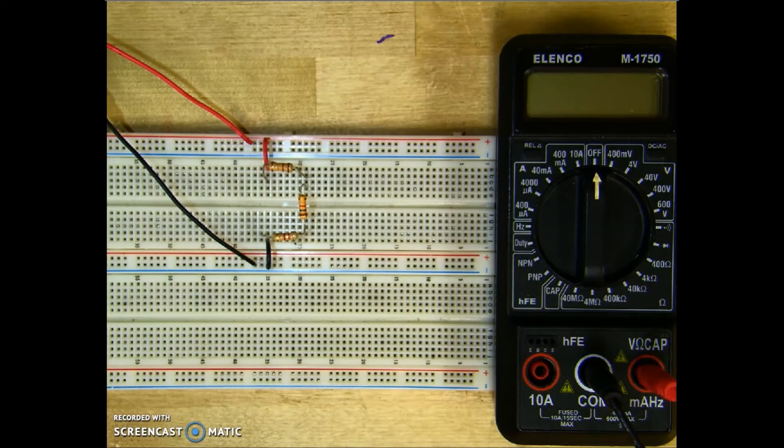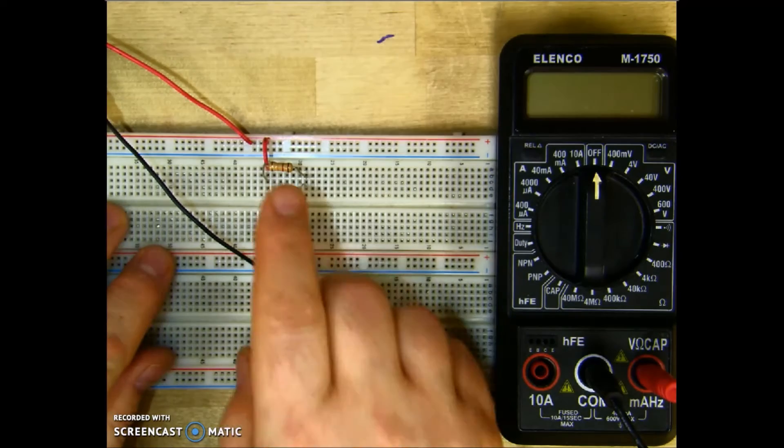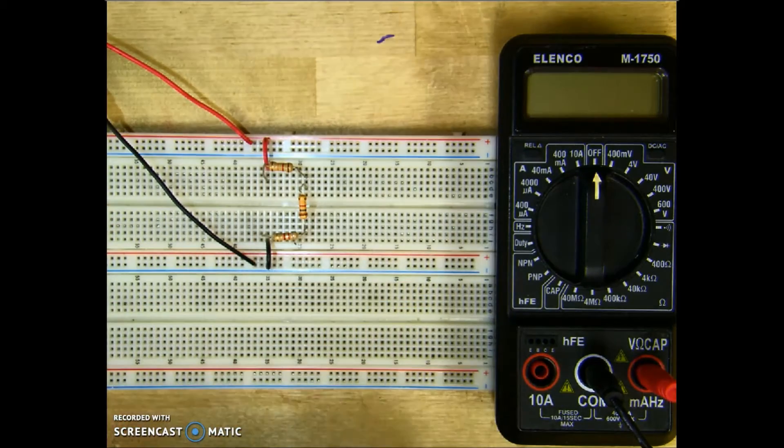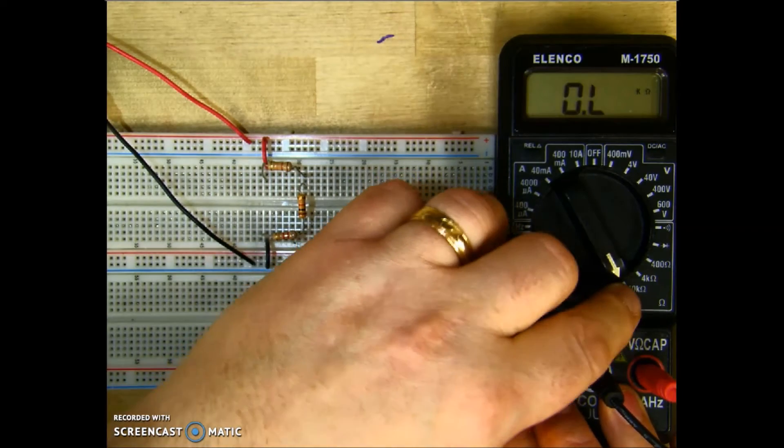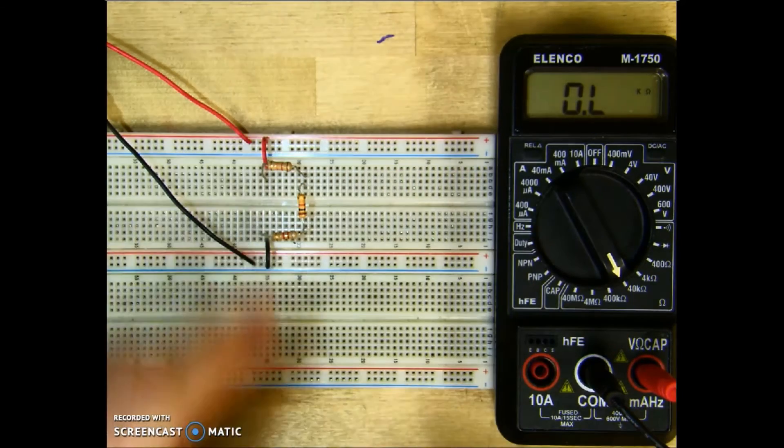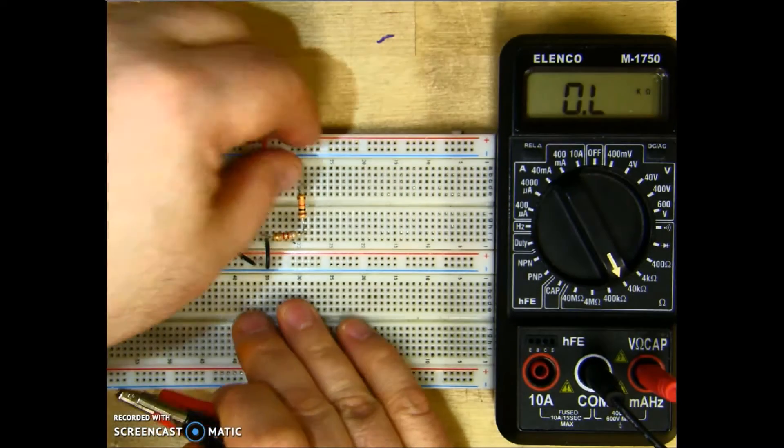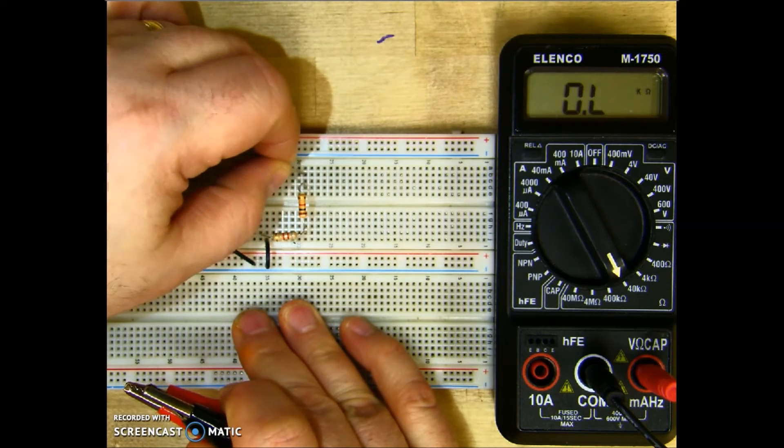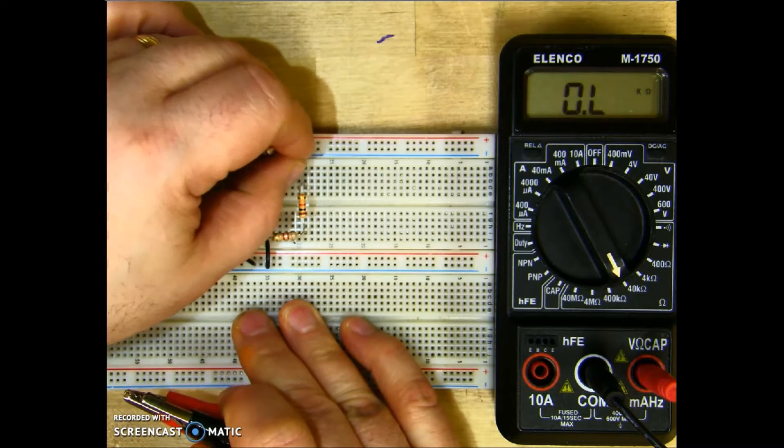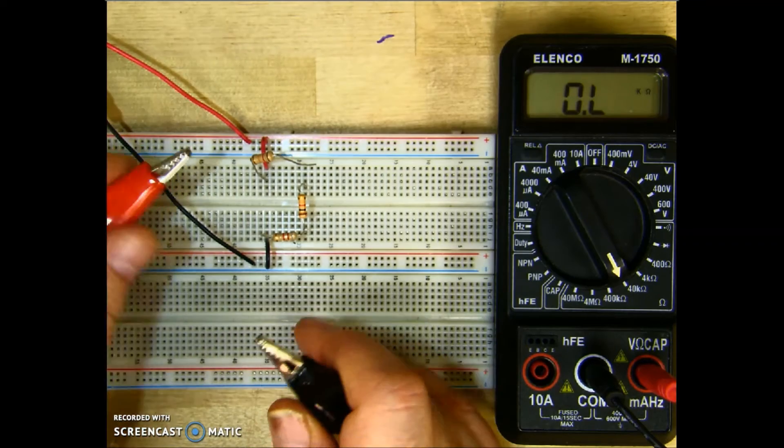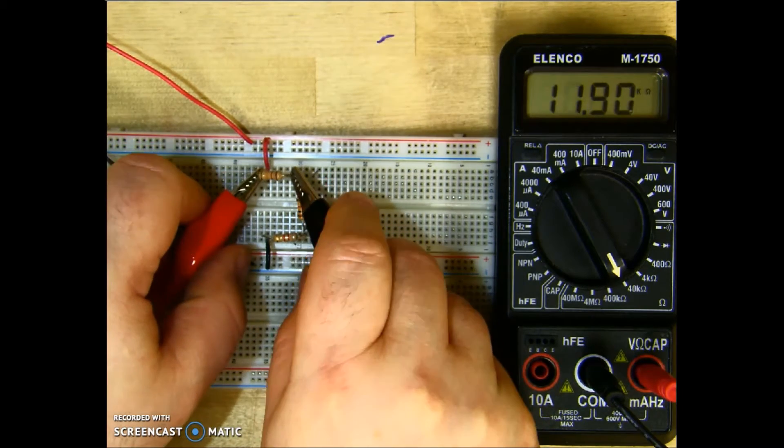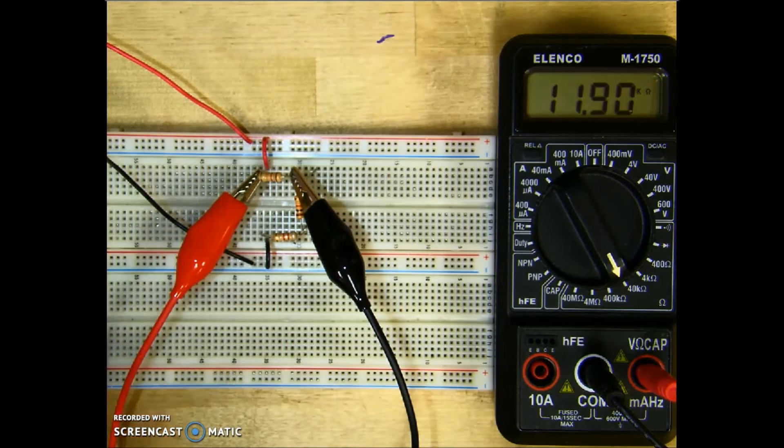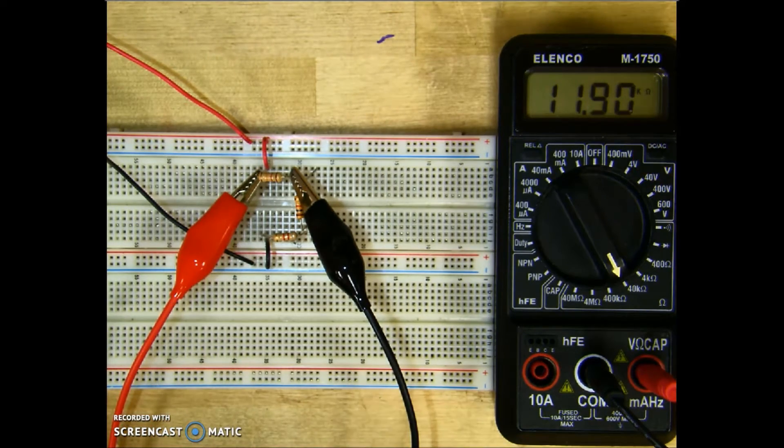So let's start with resistance. The first resistor is 12k, so on my meter I want to go to 40k. You always want to set your meter up higher than what you are reading. The proper way to read the resistor is to make sure that one terminal is out of the circuit. It doesn't have polarity, so we can hook up our leads any way we want to. And R1 is measuring 11.9k.